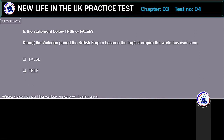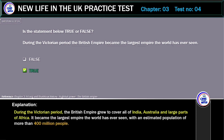Is the statement below true or false? During the Victorian period, the British Empire became the largest empire the world has ever seen. The correct answer is True. During the Victorian period, the British Empire grew to cover all of India, Australia and large parts of Africa. It became the largest empire the world has ever seen, with an estimated population of more than 400 million people.